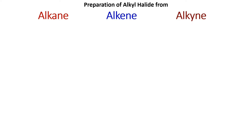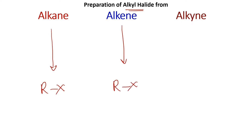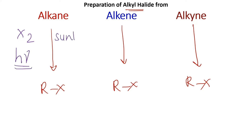We have seen how alkyl halides are prepared from alcohols. Now let us see methods of preparation of alkyl halides from alkane, alkene, and alkyne. For alkane, the reagent is X₂ in the presence of sunlight at 25°C — these are the reaction conditions to prepare alkyl halides from alkane.